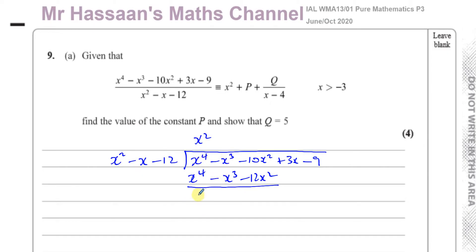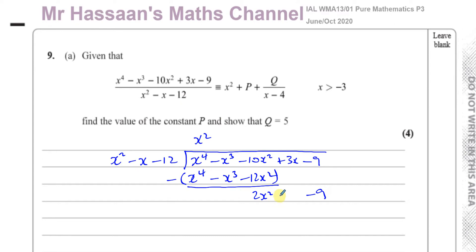And when you subtract these two lines, that will give you 0, that will also give you 0, and this will give you minus 12. You're going to have minus 10 minus minus 12, which is minus 10 plus 12, which gives you 2x squared. Bring the other terms down, which is the 3x and the minus 9. So you're going to have plus 3x minus 9.